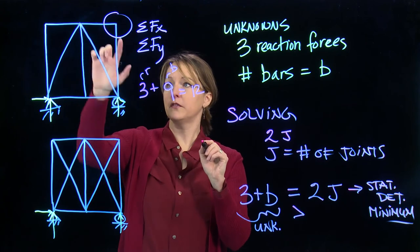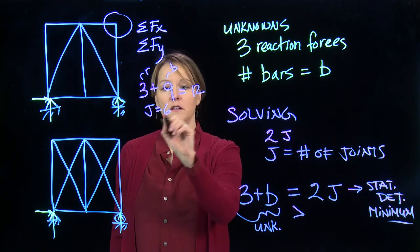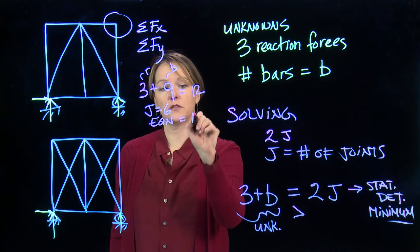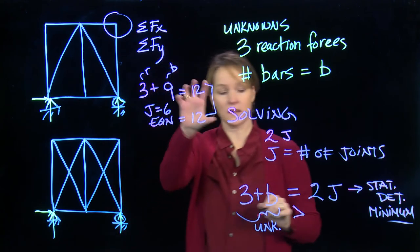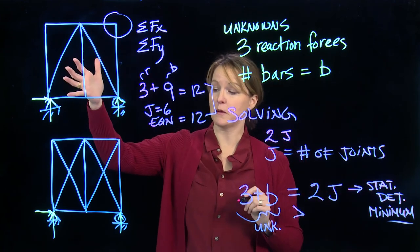Then I have 1, 2, 3, 4, 5, 6 joints. J equals 6. So my equations that I can use is also 12. Because these are equal, I have a statically determinate system. This one's solvable and has the minimum number of bars.